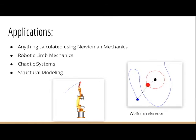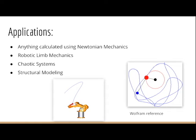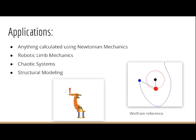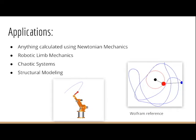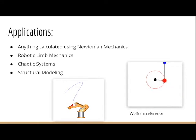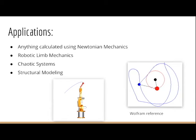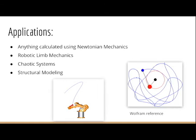As for applications, we could use Lagrange mechanics to calculate anything that Newtonian mechanics could calculate, but in higher dimensions. It's also used in robotic limb mechanics because you can model a muscle arm, which is a series of springs and dampers. Each of the arm pieces and the linkage are kind of like a pendulum, so we could try to predict the path.